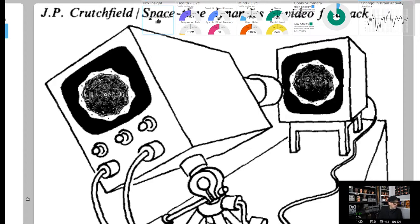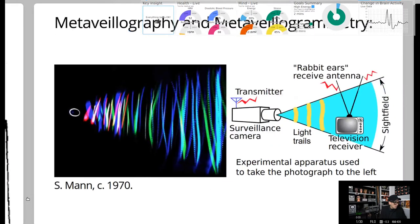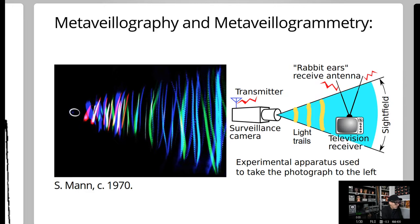Crutchfield wrote an interesting article about the space-time characteristics of video feedback, where you typically have a television screen sitting still and point a camera on a tripod at it. What I liked to play with was a reverse of video feedback — I would find a surveillance camera and tune a television receiver to it, then wave the television receiver back and forth in the room while picking up the signal. Instead of moving the camera at a fixed TV, I was moving a television at a fixed camera.